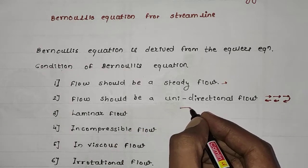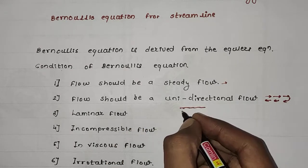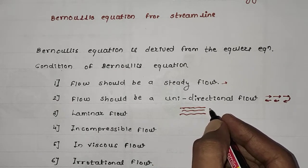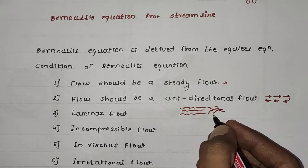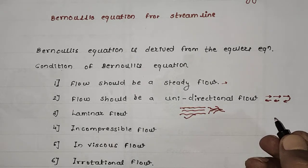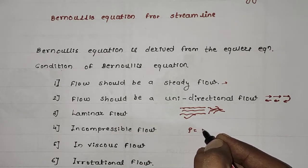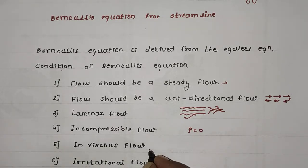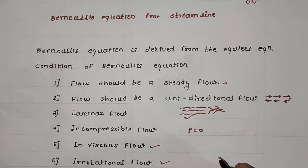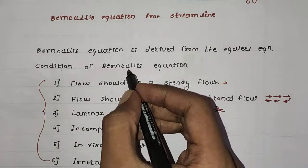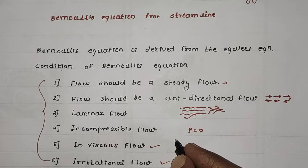The flow should be laminar flow, meaning various particles follow the same path and do not intersect each other. The flow should be incompressible, meaning density should not change — it should be constant. The flow should also be inviscid and irrotational. A fluid flow which satisfies all six conditions can be applied to Bernoulli's equation, and such conditions are only seen in pipe flow.